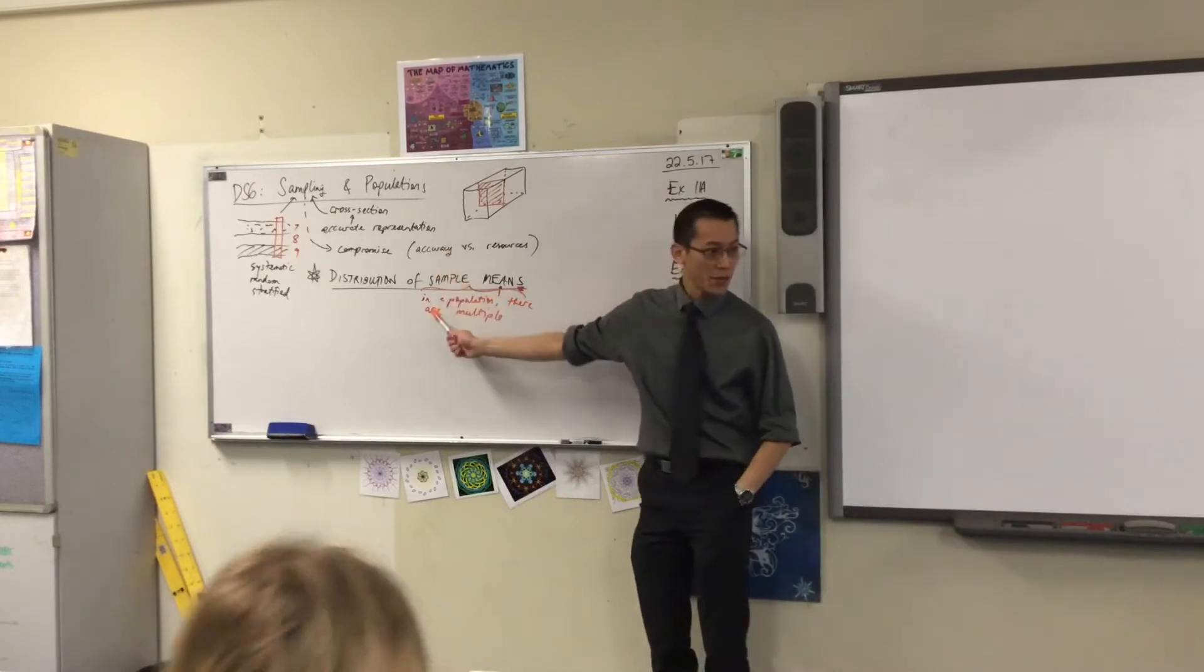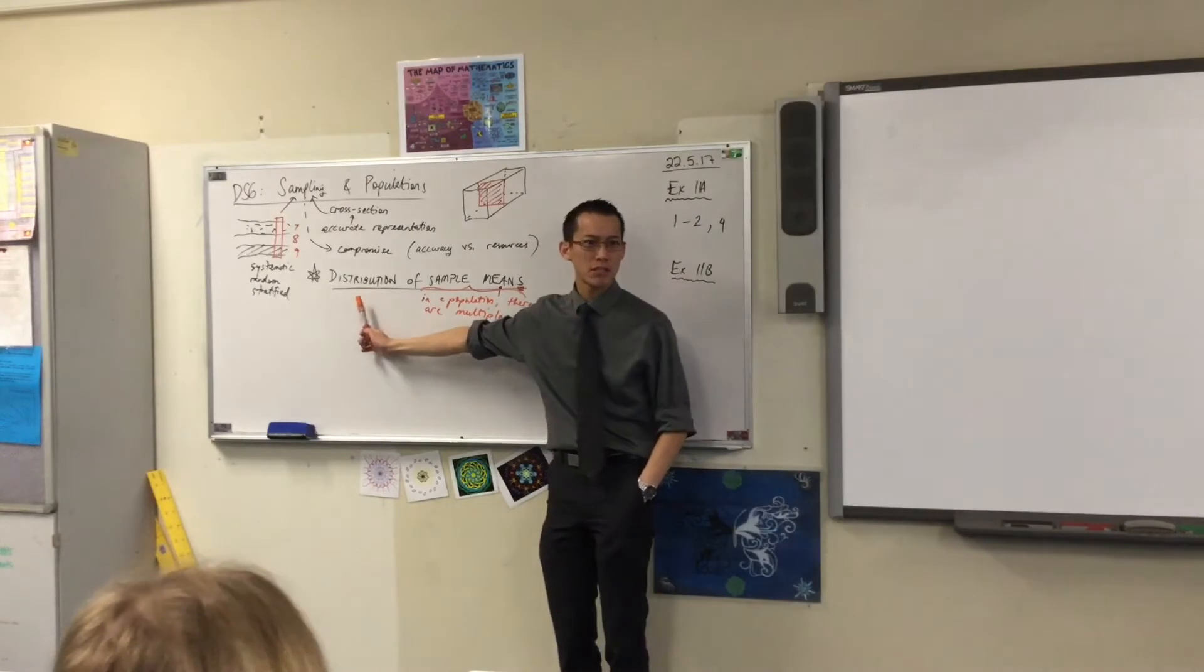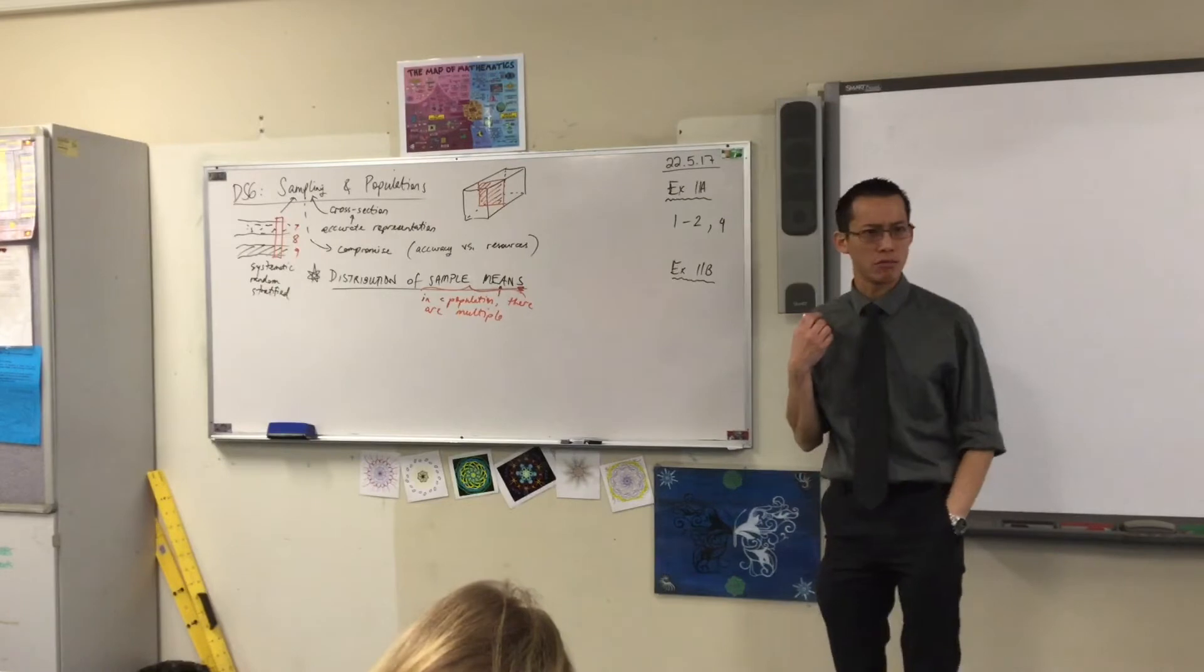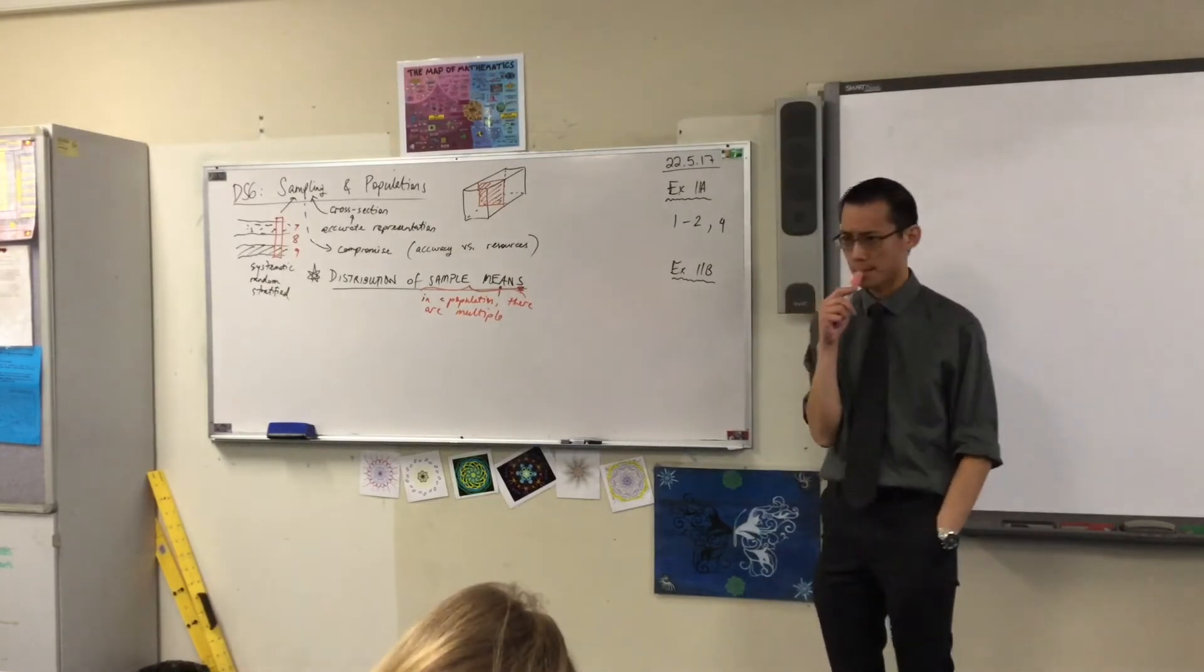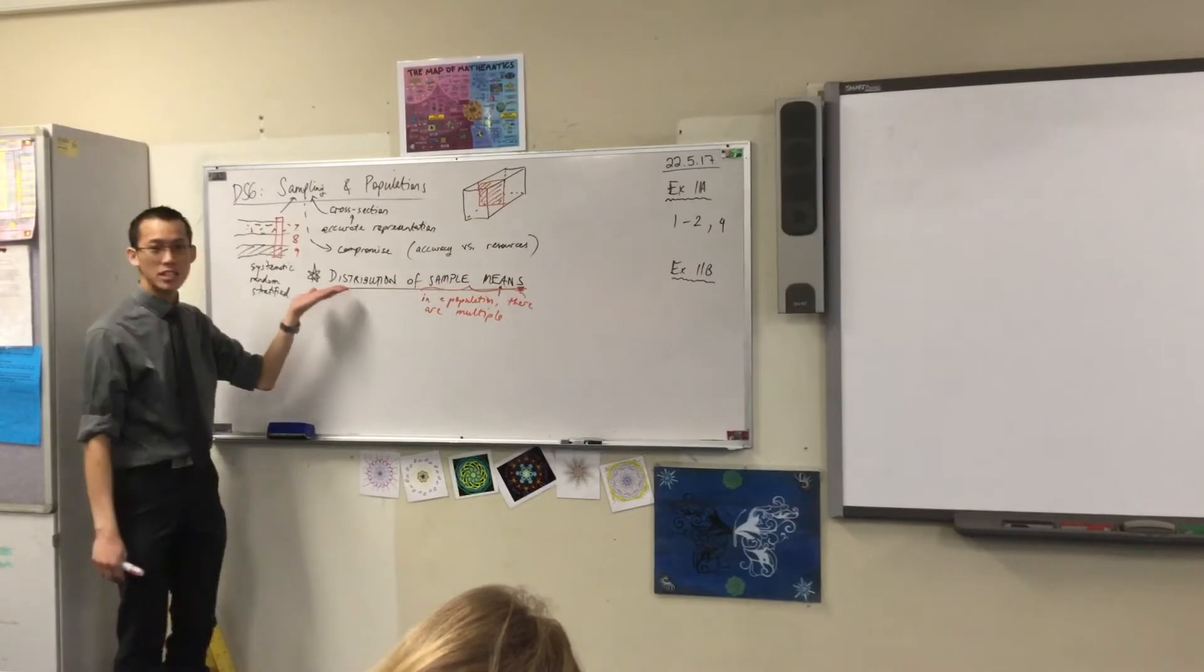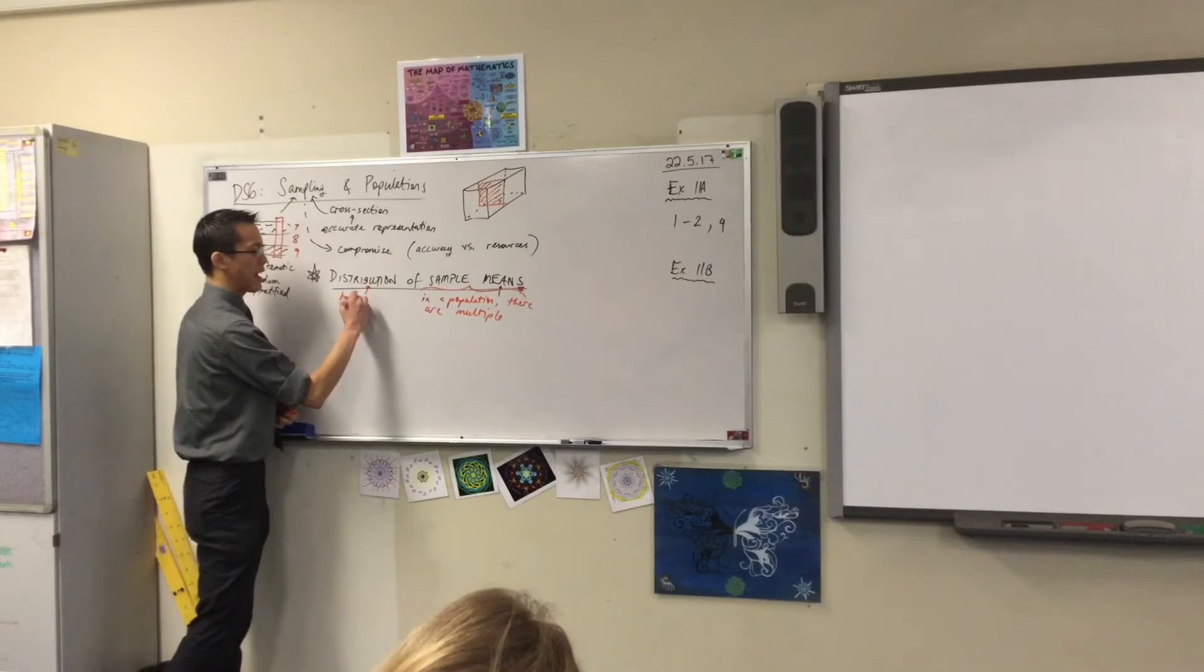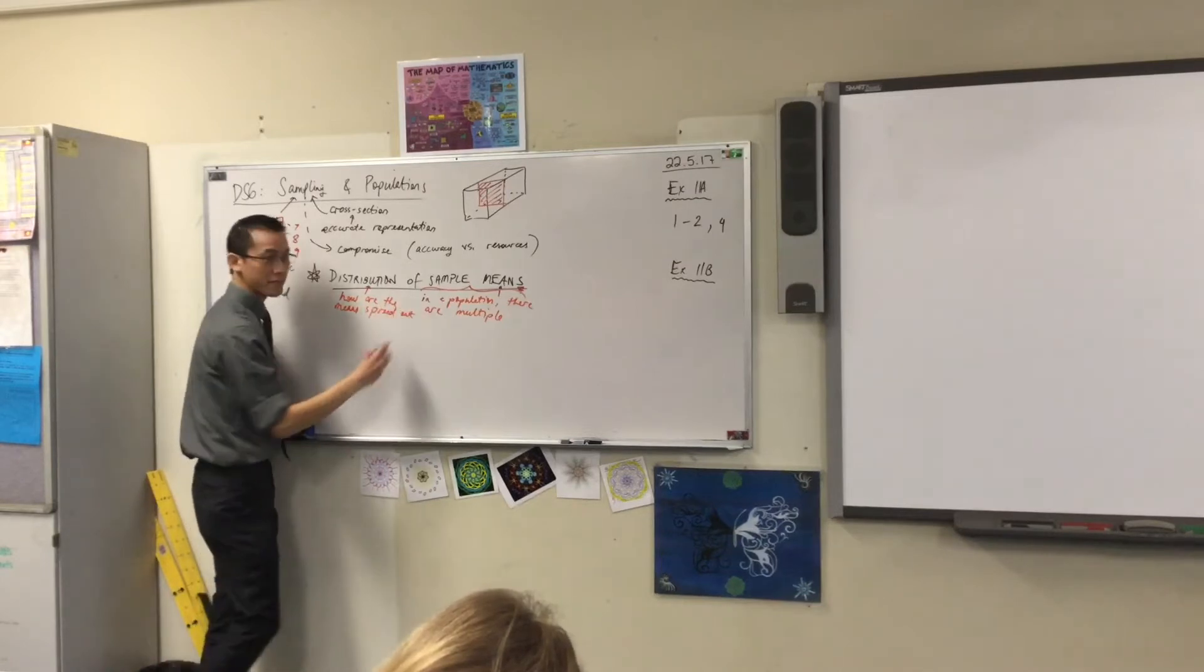So if you've got a whole bunch of different samples and every one you can work out a mean, what does this mean? We looked at this word under our last data statistics sub unit. What does the word distribution mean? Yeah, okay, so the whole idea is the means will all be different. They'll all be different. So how are they spread out? Where are they? How can we work out a pattern? Right? So this is how are the means spread out? That's literally what distributed means.